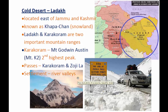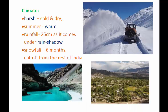Most of the people are settled in the river valleys. As for the climate — being a cold desert — the climate is very very harsh. It's very cold and very dry. Summer is a warm one.